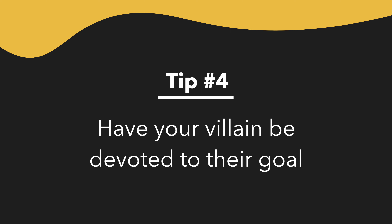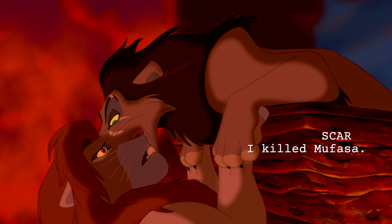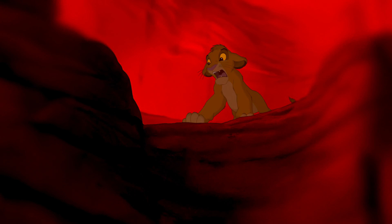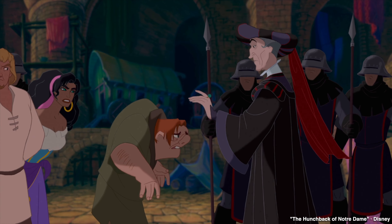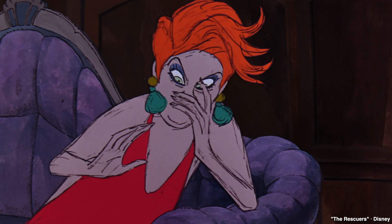Once your villain has a motivation, make them obsessed with it. Tip number four: Have your villain be devoted to their goal. Think about Scar — he's willing to kill his brother and nephew to get to a position of power, and nobody gets in the way of his goal. Frollo had been searching for the gypsies' hideout for 20 years, chasing and killing them, and won't stop until they're all dead. Syndrome prepared and built a whole organization to hunt down supers just so he could someday get his revenge — and he doesn't even have real superpowers. When your antagonist wants something, they must want it badly. What makes them dangerous is their will to do everything in their power to achieve that goal. I'm curious — what animation villain scared you as a kid? Let me know in the comments below. For me, it was Medusa from The Rescuers.